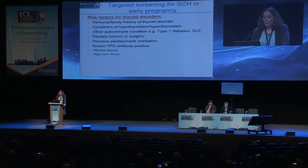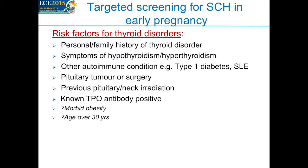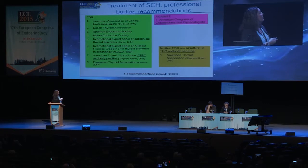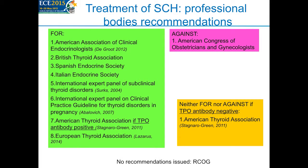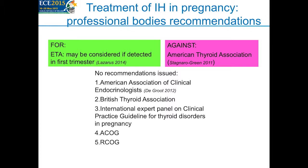Screening remains controversial. Most guidelines recommend targeted screening in specific people who might be at risk of thyroid dysfunction, and universal screening is not recommended. Most guidelines recommend treatment of subclinical hypothyroidism; the ATA guidelines specify this only in TPO antibody positive women and do not recommend for or against in TPO antibody negative women. Importantly, the American Congress of Obstetricians and Gynecologists recommends against levothyroxine replacement. For isolated hypothyroxinemia, only the European Thyroid Association recommends treatment, while the American Thyroid Association recommends against.